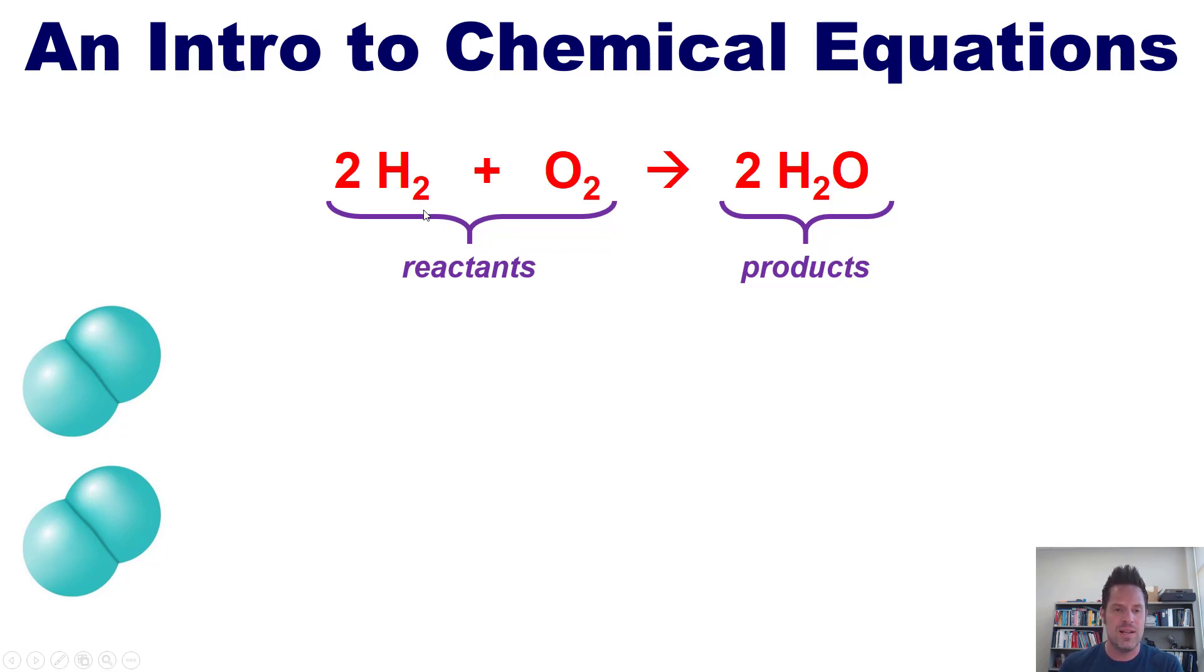What about the little 2 right here? Well, that little 2 indicates that within each H2 molecule, there are two H atoms. Separately, we have one O2 molecule, each of which contains two individual O2 atoms. And when we combine them together and everything goes nicely, this produces or yields two H2O molecules.